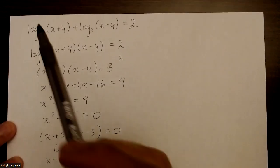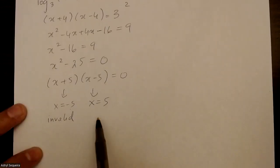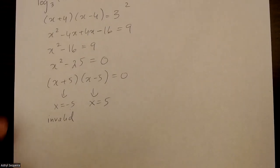If I put positive 5 in these two brackets, I get positive numbers, so this is my good solution.